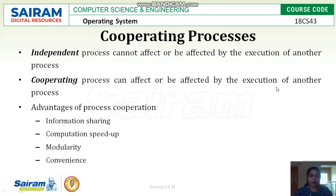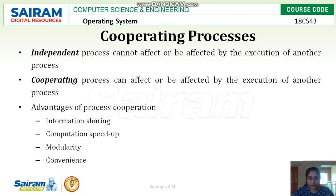Next we have cooperating processes versus independent processes. Independent processes cannot affect or be affected by the execution of another process, because they do not share any memory or resources with other processes. They can execute by themselves. But cooperating processes will affect other processes' execution because they share information and resources.